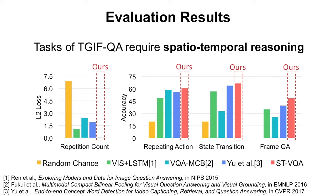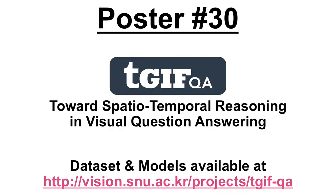Here, we show some empirical results on our dataset comparing against four baseline approaches. In all four tasks, our model with spatial-temporal attention achieves the best result. This suggests that our tasks introduce an interesting challenge that requires spatial-temporal reasoning. Thank you for your attention and please visit poster number 30 for more details.